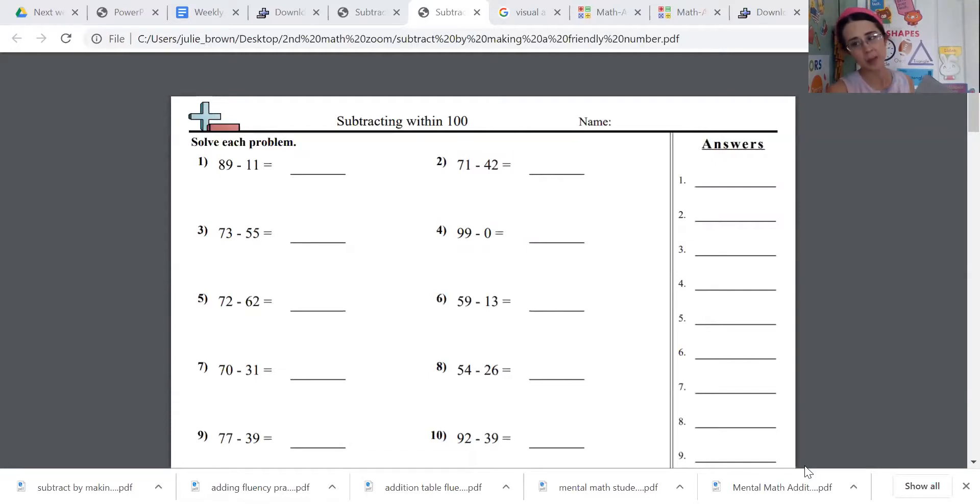Friendly numbers end in zero like 10, 20, 30. Our first subtracting problem is 89 take away 11, and the second one is 71 take away 42. So we'll use our friendly number strategy for those first two problems.